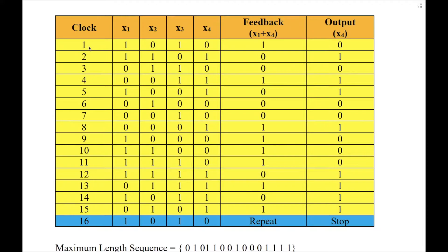At the very first clock, the contents are 1010, and at the end of this clock, we compute the feedback. Feedback is x1 plus x4, a modulo-2 addition, so 1 plus 0 is 1. The output is nothing but x4, so I will simply copy the content of x4 into the output column. In the next clock, clock 2, the feedback comes back to the first flip-flop, and the next three column contents are taken from the first three columns of the previous clock. So 101 is written here.